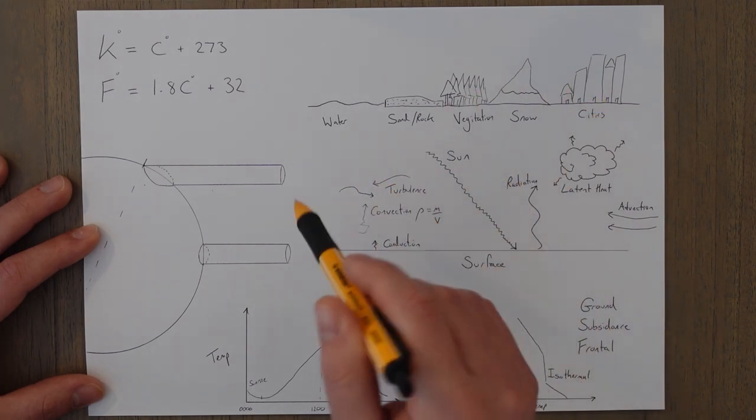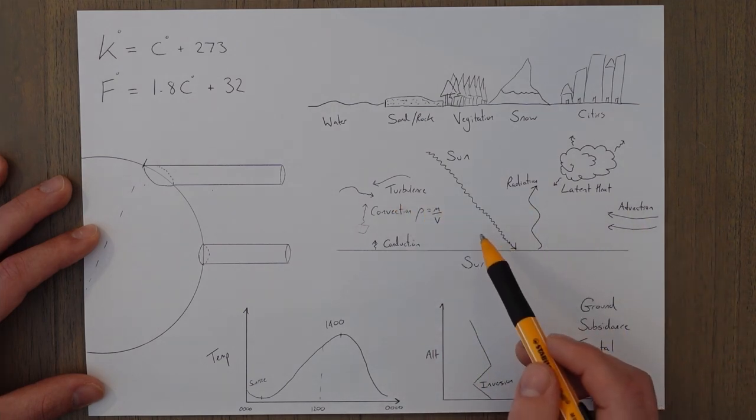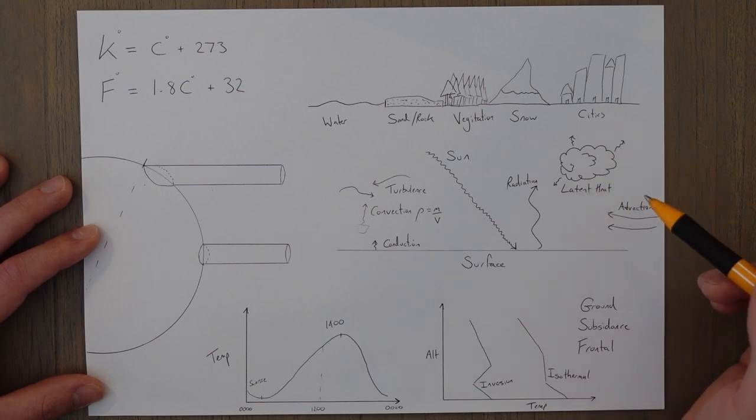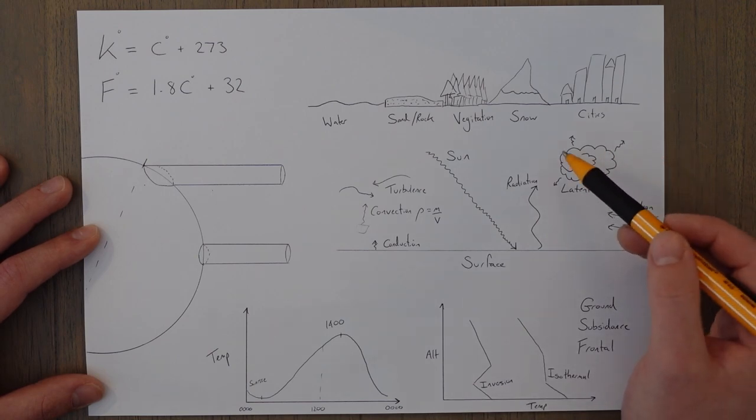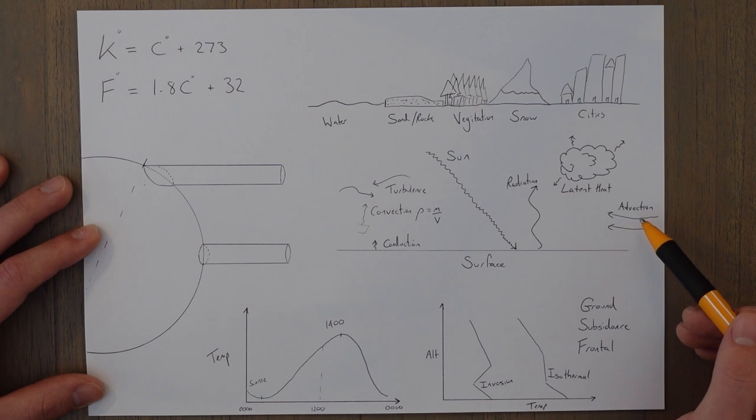When you've got local winds, that'll mix it a bit more through turbulence heating. When the air rises up enough, it will condense and form clouds. In this process, it releases off latent heat. If we get a weather system coming in or a wind blowing in from somewhere hotter, we would call that advection heating.